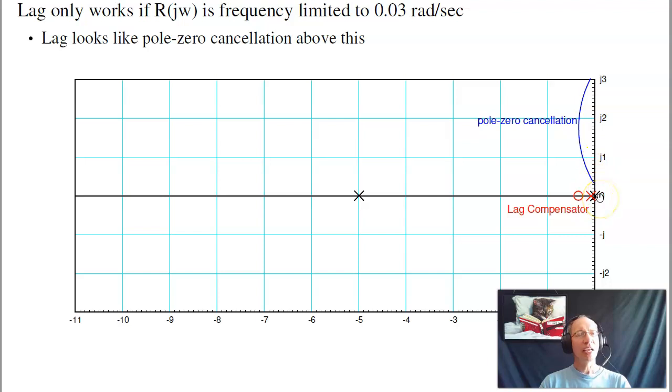The only place the lag compensator has an impact is right here, DC. At DC, I'm 10 times closer to the pole than the zero, so DC gain's 10 times higher. Move up to say maybe 0.3 radians per second, and now the impact of the lag compensator is basically gone. So the lag compensator only works as long as your reference is band limited to about 0.3 or 0.03 radians per second. And that's pretty limiting.